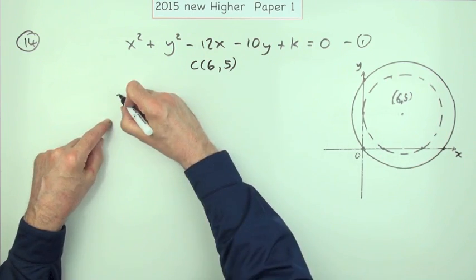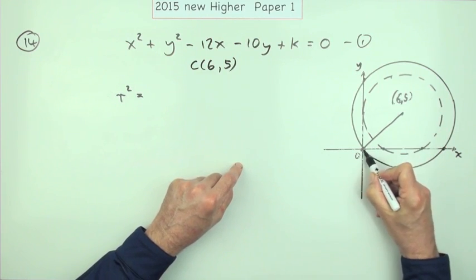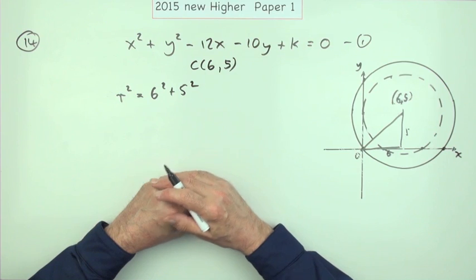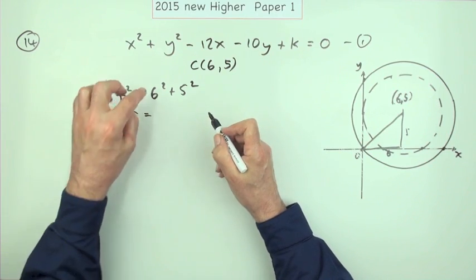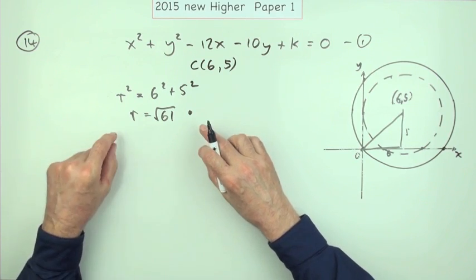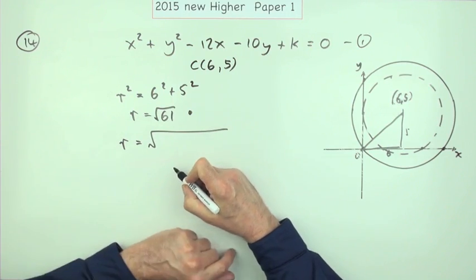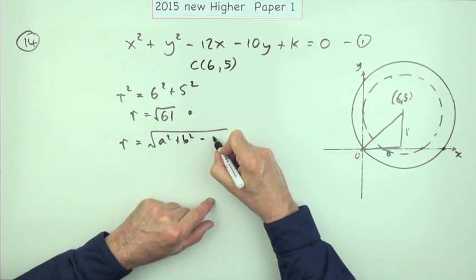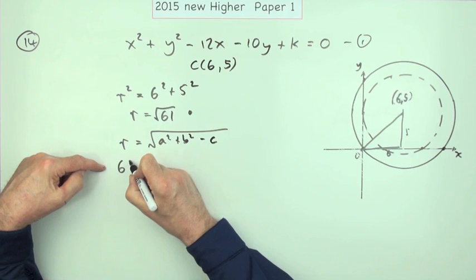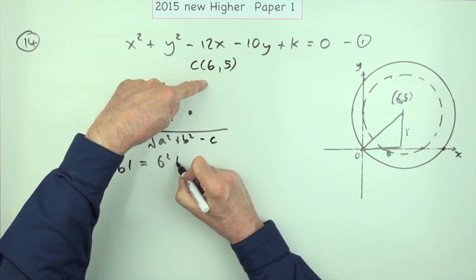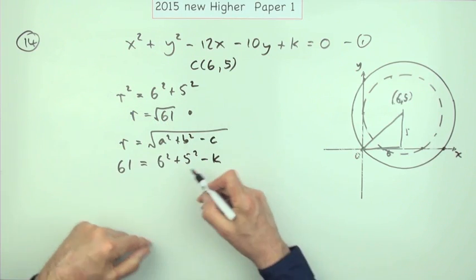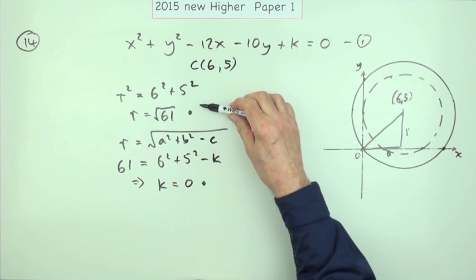This case was patched into the marking scheme. Using the radius method, the radius squared comes from Pythagoras — six along, five up — so r² = 6² + 5² = 36 + 25 = 61, giving r = √61 for the first mark. Then using the formula r² = a² + b² − c: 61 = 6² + 5² − k. Since 6² + 5² = 61, that means k = 0.